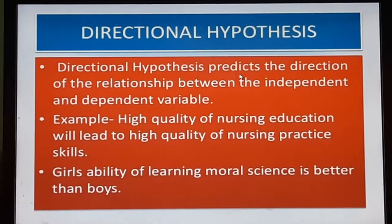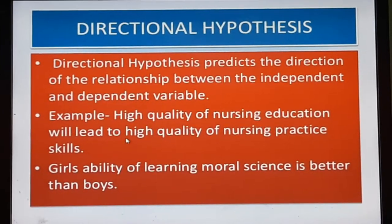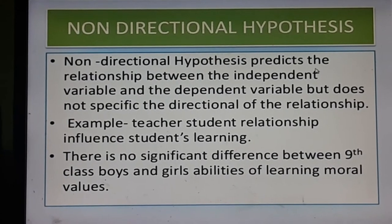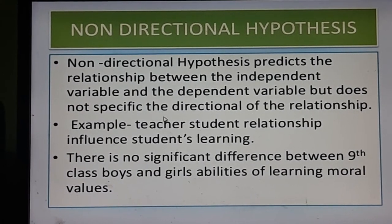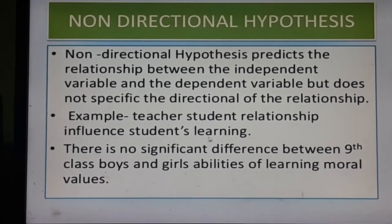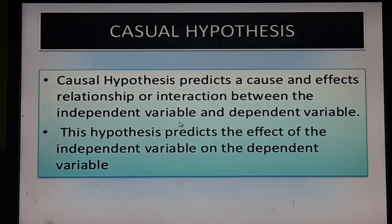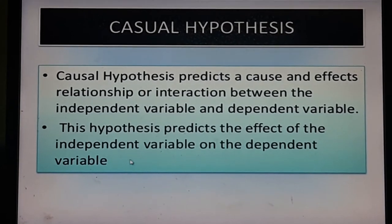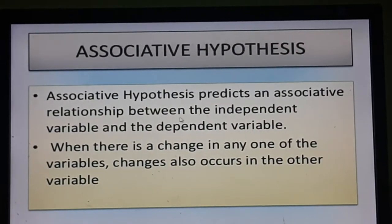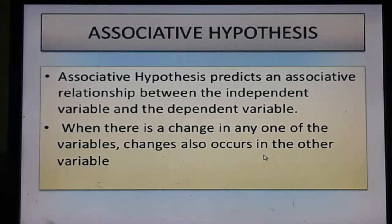Directional hypothesis predicts the direction of the relationship between the independent and dependent variable. For example, high quality of nursing education will lead to high quality of nursing practice skills. Non-directional hypothesis predicts the relationship between the independent and dependent variable but does not specify the direction of the relationship. For example, teacher-student relationship influences students' learning. Causal hypothesis predicts a cause and effect relationship between the independent and dependent variable. Associative hypothesis predicts an associative relationship between variables; when there is a change in any one variable, change also occurs in the other.